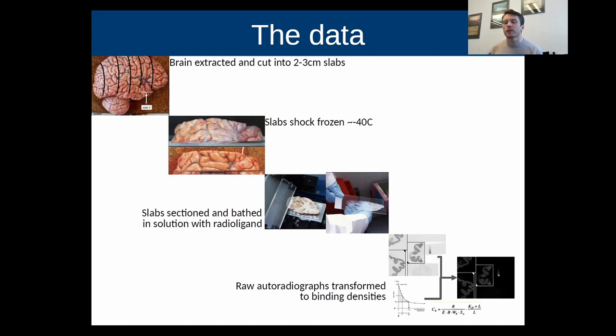The data we're working with come from human brains. The brains were extracted post-mortem and cut into two to three millimeter slabs. Each of these slabs were frozen separately and then sectioned. The sections were bathed in a solution for different radioligands that bind to different neurotransmitter receptors. These produce autoradiographs, which give you a 2D representation of neurotransmitter receptor density in the brain.